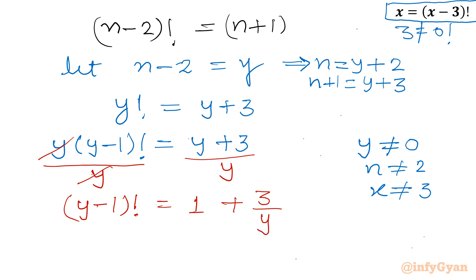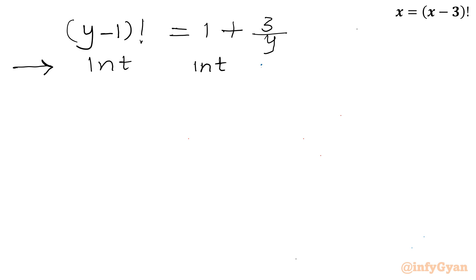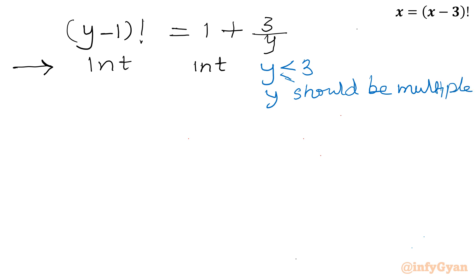Now I will apply a few conditions. We have (y-1)! = 1 + 3/y. First condition: the left-hand side must be an integer, so the right-hand side must also be an integer. For 3/y to be an integer, y must be less than or equal to 3. Second condition: y must be a multiple of 3. Third condition: from the left-hand side, y must be greater than or equal to 1.